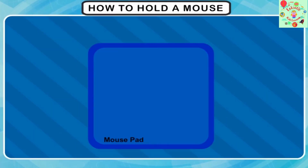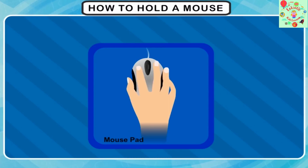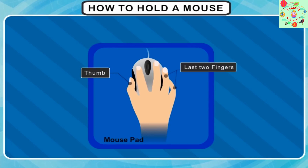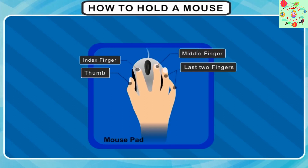Now we'll study how to hold a mouse. Keep the mouse on the mouse pad. Place your palm on the mouse and hold it with your thumb and last two fingers. Place your index finger on the left button and your middle finger on the right button.